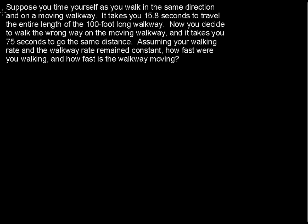How do you time yourself as you walk in the same direction on a moving walkway? Suppose you time yourself walking in the same direction and it takes you 15.8 seconds to travel the entire length of the 100-foot walkway. Now you walk the wrong way on the moving walkway, and it takes you 75 seconds to go the same distance. Assuming your walking rate and the walkway rate remain constant, how fast were you walking and how fast is the walkway moving?